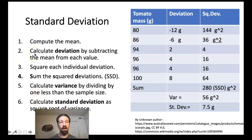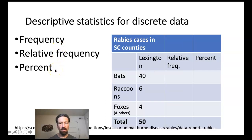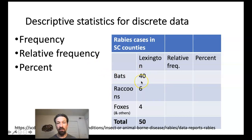We now move on to descriptive statistics for discrete data—data that is countable and falls into categories. The statistics we are interested in are frequency, relative frequency, and percent. Frequency is the simplest measure: it refers to the number of observations in each category. For example, the frequency of rabies-infected bats detected is 40, raccoons is 6, and foxes is 4.